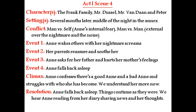Event four: Anne falls back asleep. The climax: Anne confesses there is a good Anne and a bad Anne, and she struggles with who she has become — an internal conflict happening inside her mind. The resolution: Anne falls back asleep, and things continue as they were. We hear Anne reading from her diary, sharing her thoughts — she would write in the diary and share with others what was going on inside her mind.